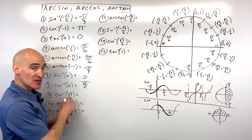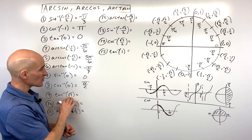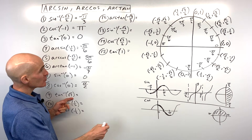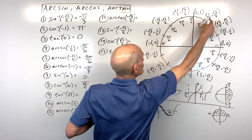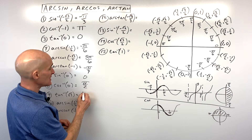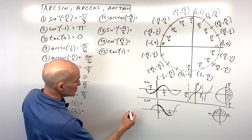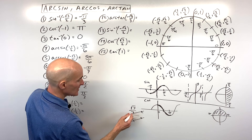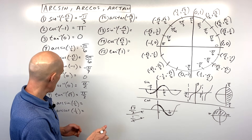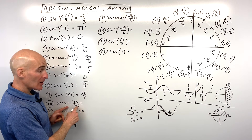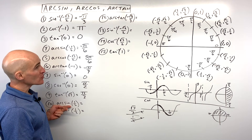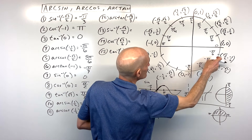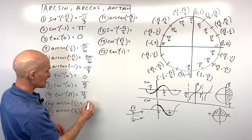For number nine, the tangent inverse of square root of three — tangent of what angle equals square root of three? Tangent is the y-coordinate divided by the x-coordinate. At pi over three, tangent equals square root three over two divided by one half: multiply numerator and denominator by two, the twos cancel, giving square root three over one, which is square root of three. So the answer is pi over three. For number ten, the arc sine of one half — sine of what angle equals one half? The y-coordinate equals one half at pi over six, restricted from negative pi over two to positive pi over two.